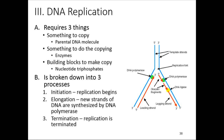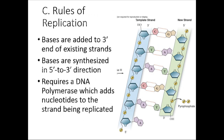Replication requires three things: the DNA to copy, enzymes to do the work, and nucleotide building blocks to make the new strand. The process breaks down into three phases: initiation (the start), elongation (adding more nucleotides), and termination (when it's done).